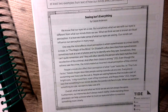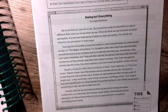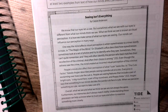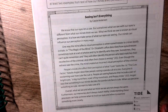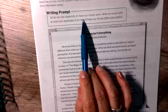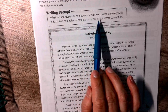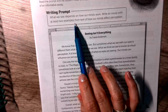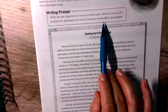As I read, listen for two ideas that Casey Anderson discusses in her essay. Pay attention to the details she uses to develop her idea about how the human mind affects perception. The writing prompt says: what we see depends on how our minds work. Write an essay with at least two examples from the text about how our minds affect perception.